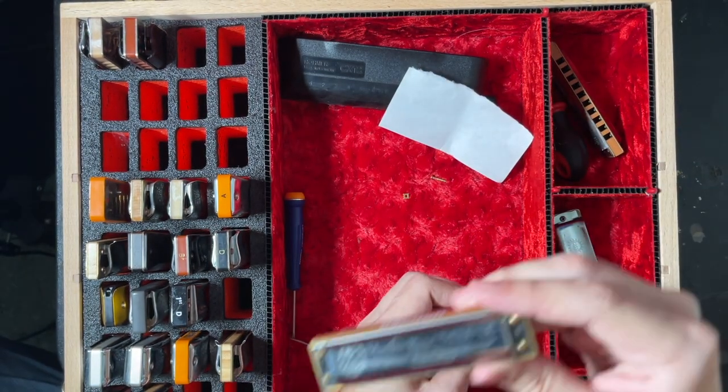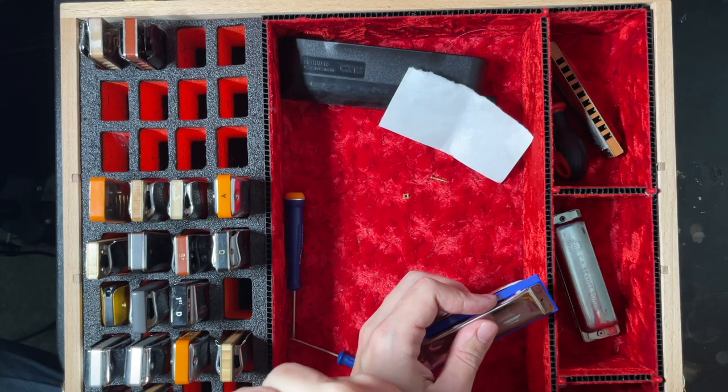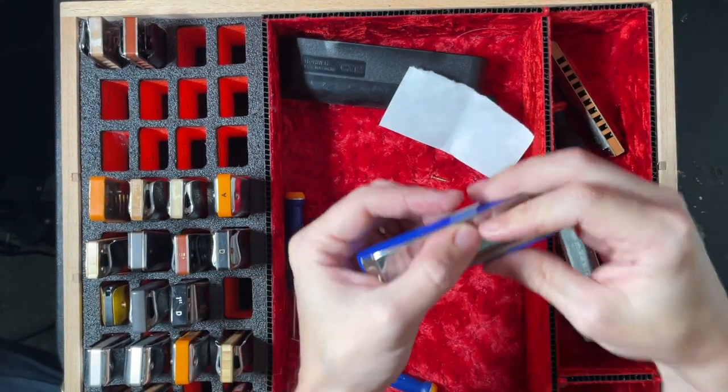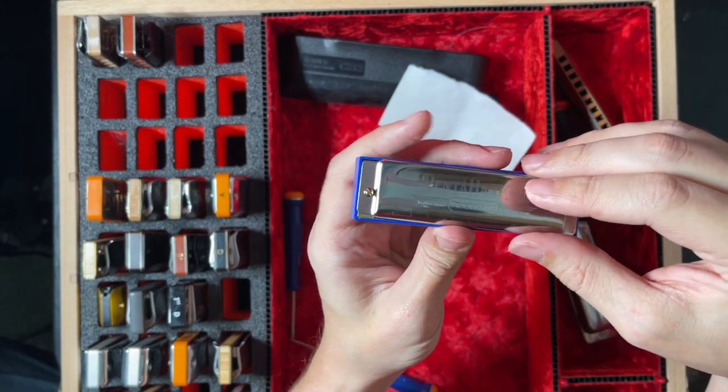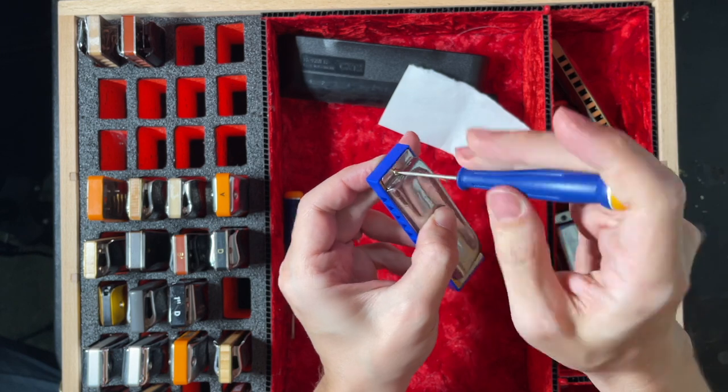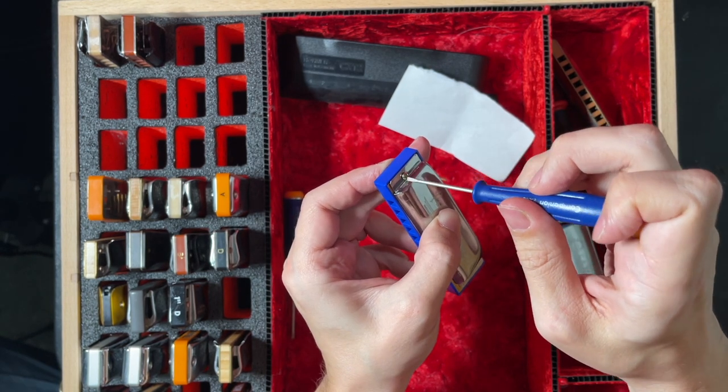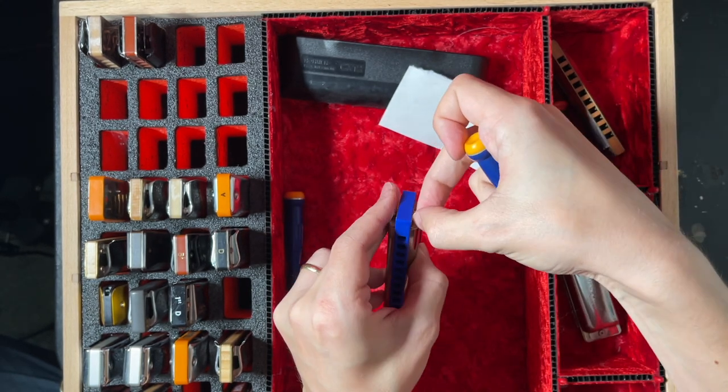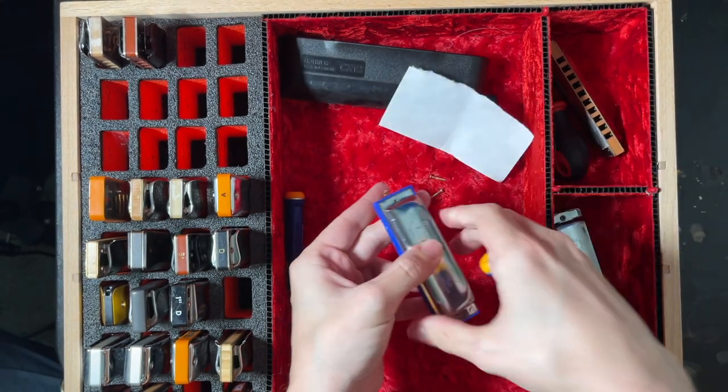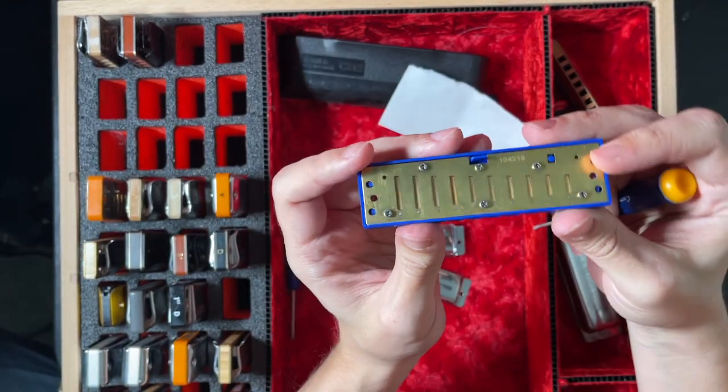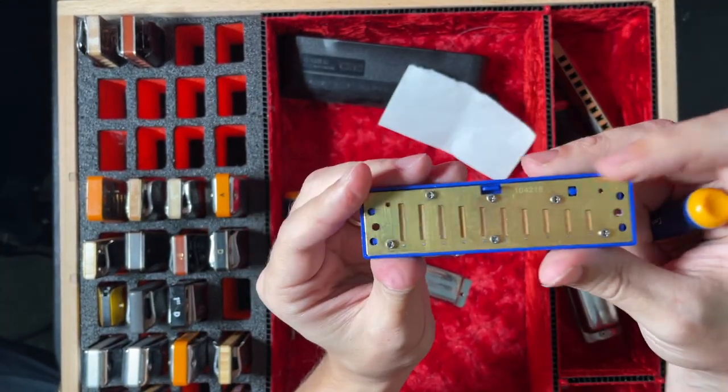Now there are some harmonicas that don't have screws like standard Marine Bands. They just have nails and so you can't take the plates off of these guys, and that's why I don't recommend you get them. If you're going to get a Marine Band, either get a Marine Band Deluxe or get a Crossover. I think those are my choices, but this is essentially a Special 20 so I'm going to take the plates off here and we'll see what we're working with. Already took one side off just to make this go a little bit faster. Alright, almost there we go.